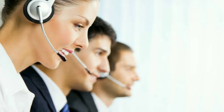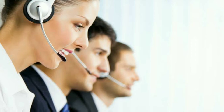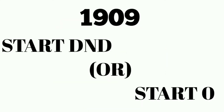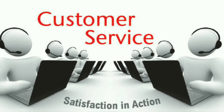Let's see how you can activate DND to stop customer calls and messages. First, open the message app on your mobile. Open the menu. When you want to activate DND, type START space O — that is one code. With this code, you will stop all customer calls and messages within 45 days.